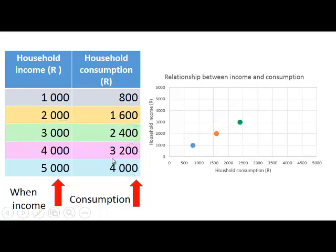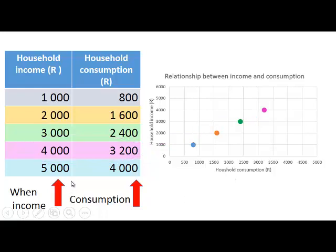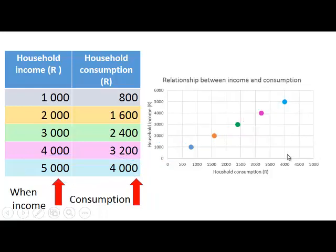The fourth point: when household income increases to four thousand, household consumption increases to three thousand two hundred. And the last point: when household income increases to five thousand rand, household consumption increases to four thousand rand. So here we have all the data points corresponding to the different combinations of household income and household consumption.